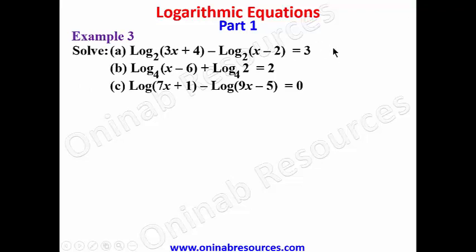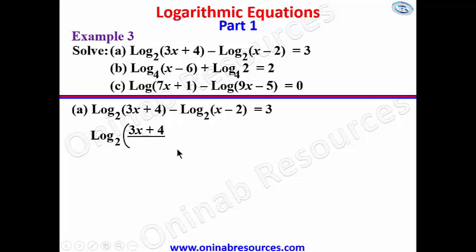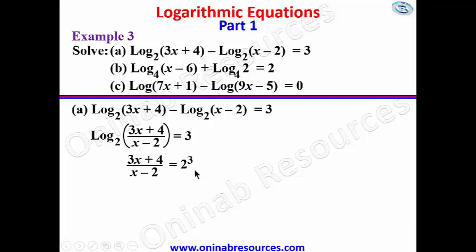For example 3, we solve logarithmic equations in parts a, b, and c. Starting with part a: log to base 2 of (3x plus 4), minus log to base 2 of (x minus 2), equals 3. Applying the appropriate law of logarithms, since this is subtraction we divide: log to base 2 of (3x plus 4) over (x minus 2) equals 3. This gives us (3x plus 4) over (x minus 2) equals 2 to the power of 3, which is 8.